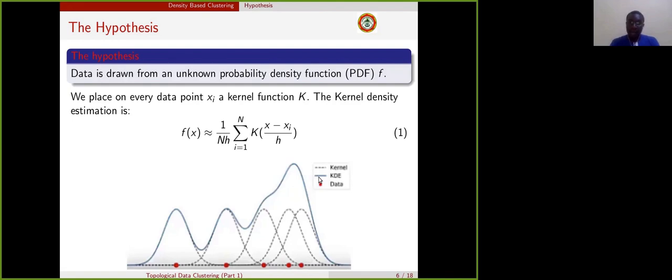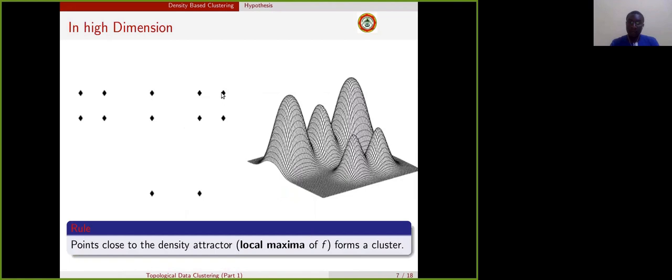Here we are using only a function with one variable, but density estimation can use high dimensional data like this one here. We see here that we have about one, two, three, four, and five clusters, which correspond to these five peaks.